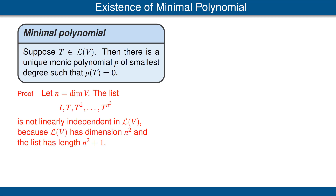Let n equal the dimension of V, and look at the list of the identity, T, T squared, up to T to the power n squared. That list has length n squared plus 1, and we're in a vector space L(V) with dimension n squared. Thus, the list cannot be linearly independent.